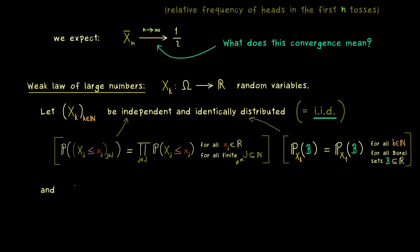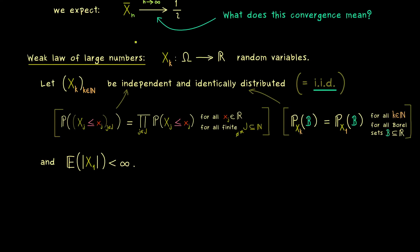Moreover, we also need one additional assumption: we need that all the expectations exist. A short formulation is to say that the expectation of the absolute value of X_1 is finite. It does not matter which random variable we choose, because all the expectations have to be the same anyway. In other words, the additional requirement is that all the random variables are integrable.